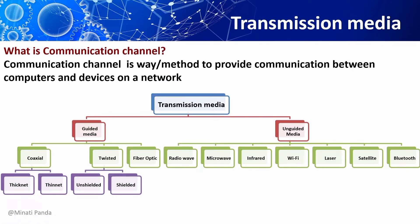Transmission media can be copper-based network, where the bits are in the form of electric signals, and the second one is fiber-based network, where the bits will be in the form of light pulses. The quality of data transmission is determined by the characteristics of the medium or signal.